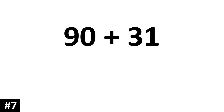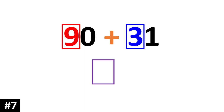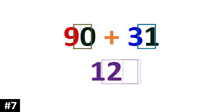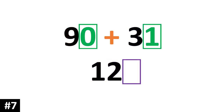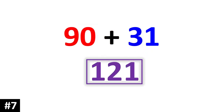How about 90 plus 31? We're looking at 9 tens plus 3 tens, which gives us 12 tens. Looking at the ones: 0 plus 1 is 1. The answer is 121.